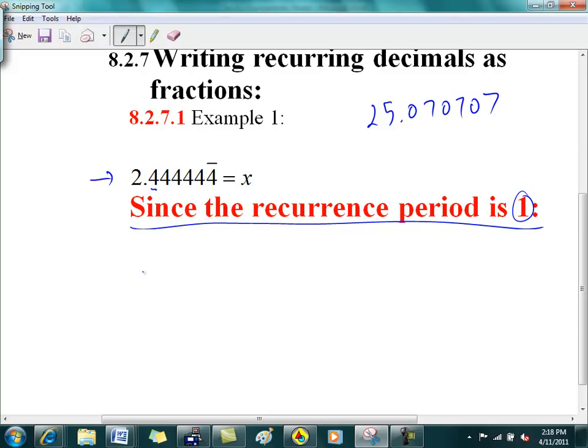So since the period of this is 1, I'm going to times this equation by 10 to the 1. If the period was 2, then I would times it by 10 to the 2. So you're going to times both sides by the same thing. Then this guy becomes 24.44 and so on. Does everybody buy that? You times it by that. You're multiplying this equation by 10 to the 1. And you'll see why in a minute. I'm going to rewrite my first equation. I'm going to rewrite it here.